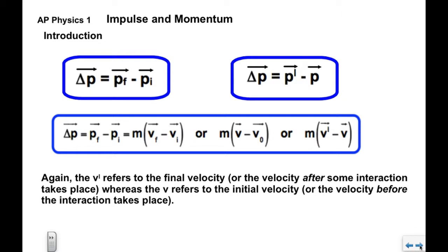Okay, we already talked about V prime and V. So V prime is the final velocity or the velocity after the interaction. V is the initial velocity or the velocity before the interaction.